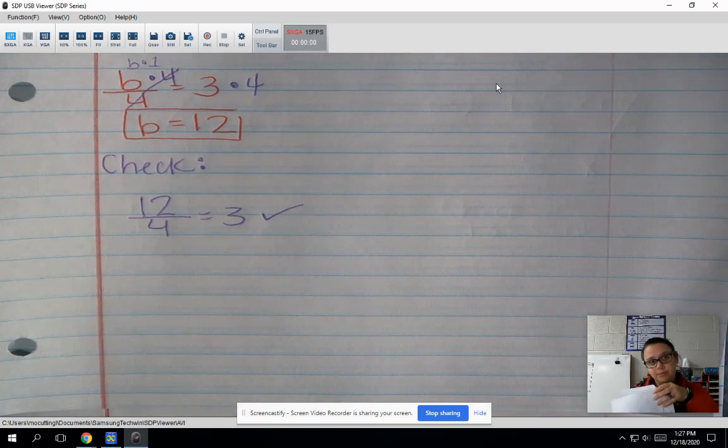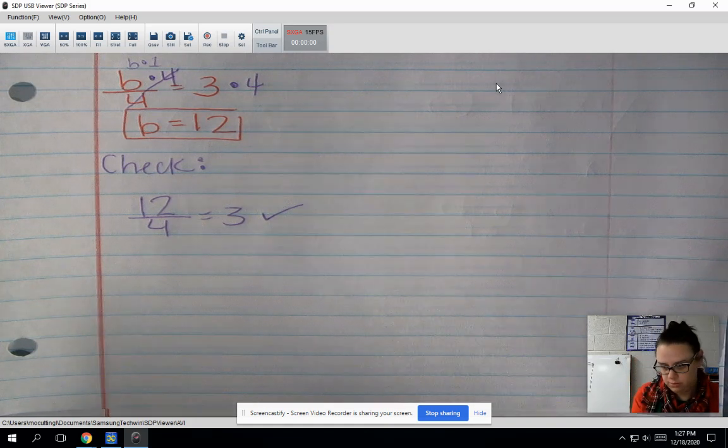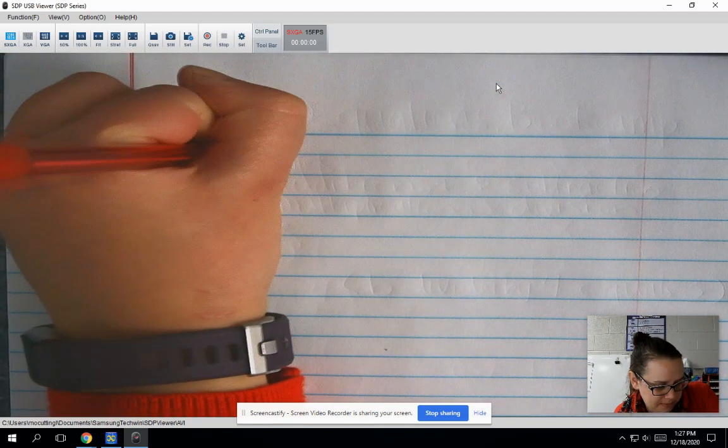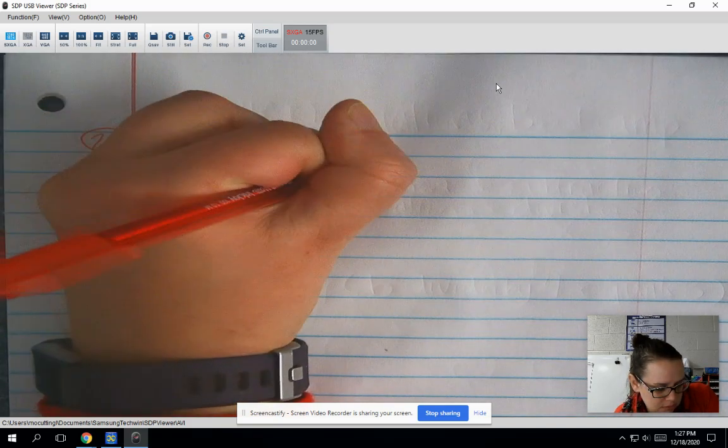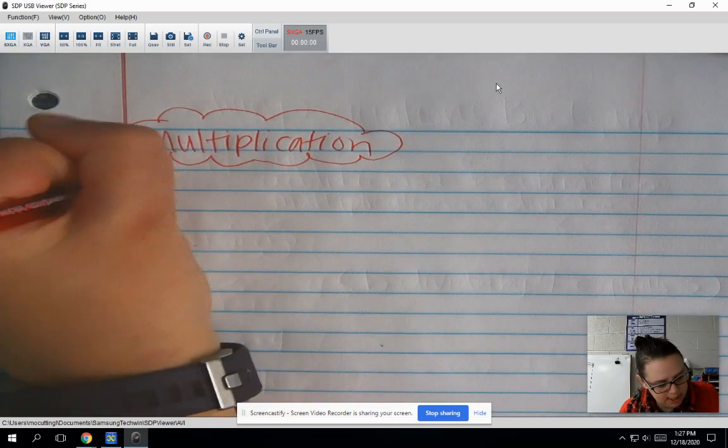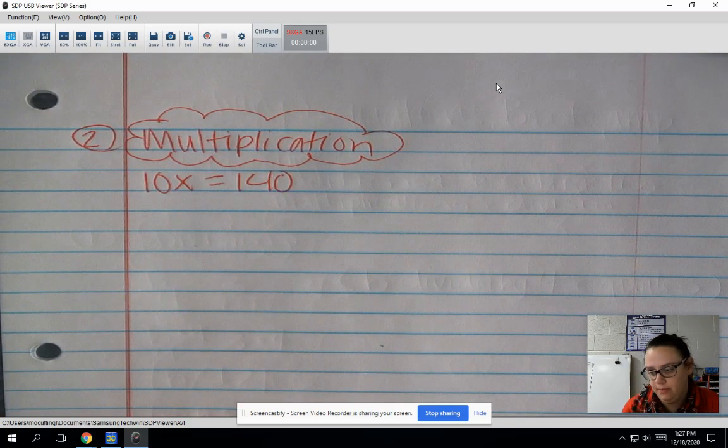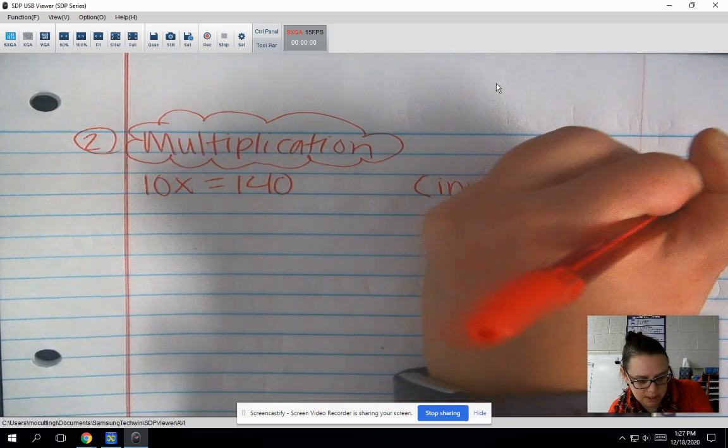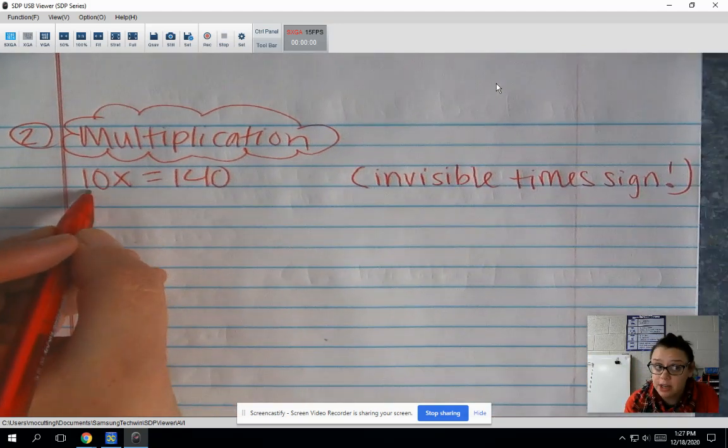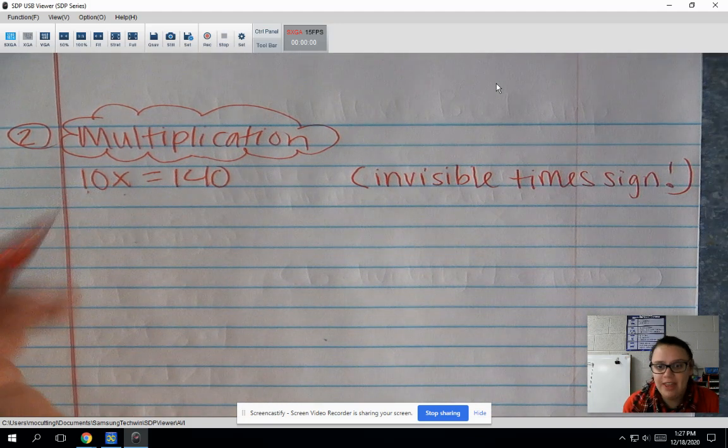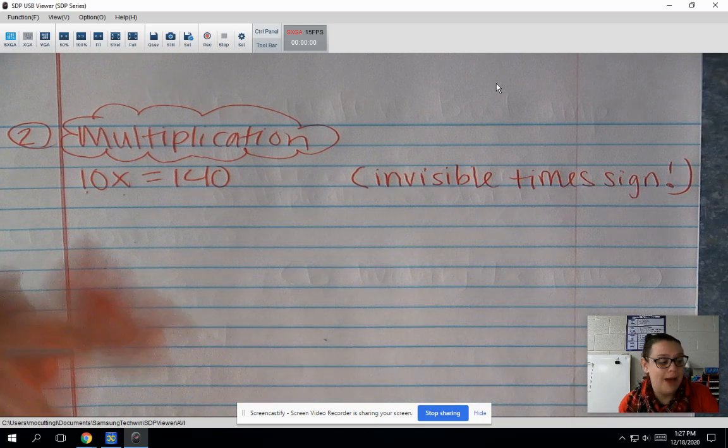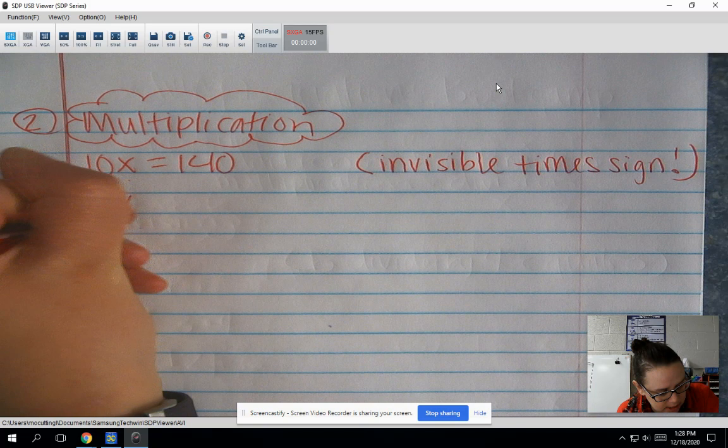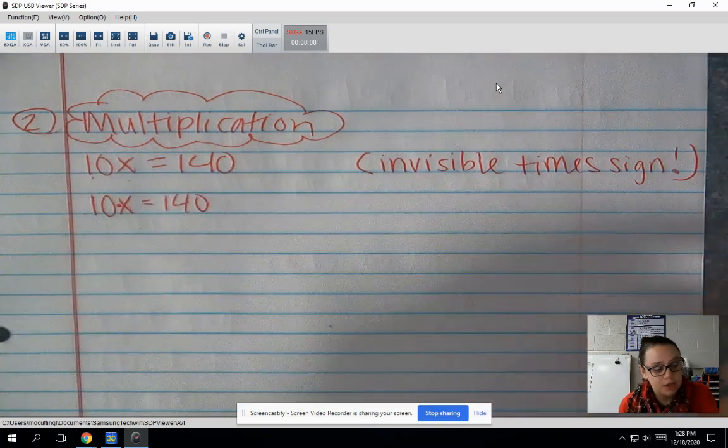Number 2 is multiplication. I'm going to go on to another page just so I don't run out of space. Number 2, multiplication. And my equation is 10x equals 140. We're going to put over here, this is one of those invisible times signs. When we have that number, that coefficient, right next to our variable, they leave that little dot out. It becomes an invisible times sign. So anytime we have that coefficient right next to our variable, that's always going to be multiplication. So I'm going to rewrite it down here. 10x. I'm going to put that little dot back in. 10 times x equals 140.